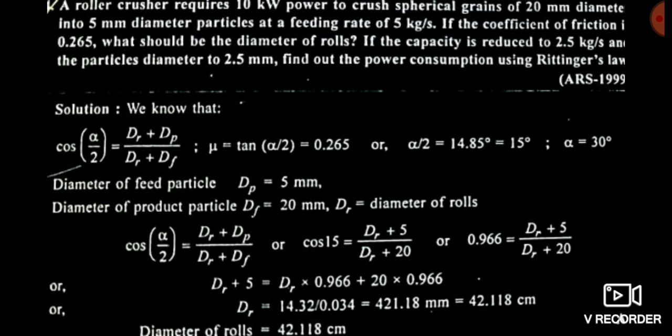Now see another question from the ARS examination — a tricky and good question. The coefficient of friction is given as 0.265. First, calculate the alpha value. Use the relation: tan(alpha/2) equals mu. With mu equal to 0.265, you get alpha/2 equal to 14.85 degrees, approximately 15 degrees, and therefore alpha equal to 30 degrees. Alpha is the angle of nip, and we consider alpha by 2 while solving.